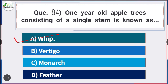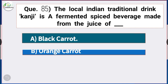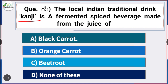Question number 85: The local Indian traditional drink kanji, a fermented spice beverage, is made from the juice of — answer option A — black carrot. Kanji is a fermented spice beverage made from juice of black carrot.